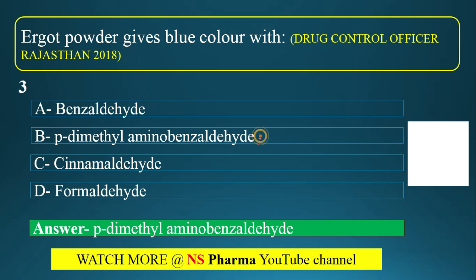DMAB — dimethylaminobenzaldehyde — is the reagent which gives blue color with ergot powder. This para-dimethylaminobenzaldehyde is a constituent of Van Urk's reagent and also Ehrlich's reagent. When ergot powder or ergot alkaloid reacts with DMAB, Van Urk's reagent, or Ehrlich's reagent, it gives a blue color.